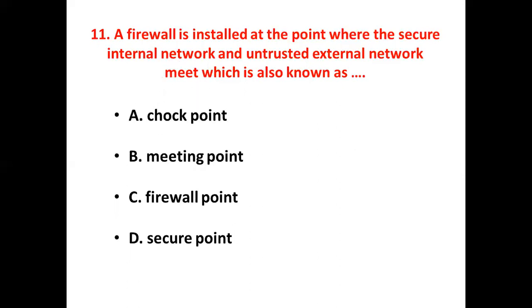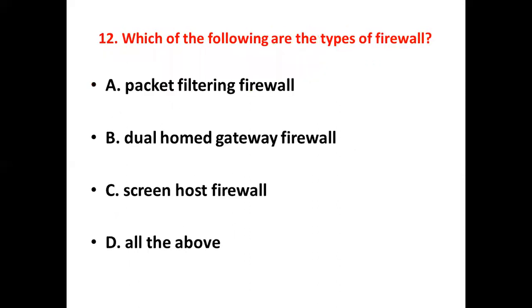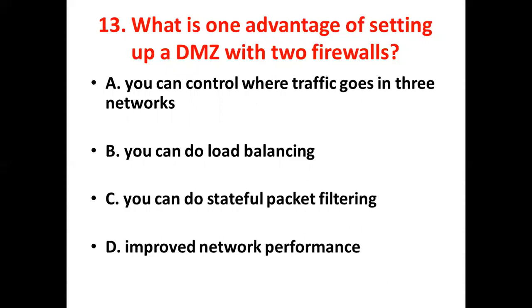Eleventh bit: A firewall is installed at the point where the secure internal networks and untrusted external networks meet, which is also known as — Option A: choke point. Option B: meeting point. Option C: firewall point. Option D: secure point. Answer: Option A, choke point.